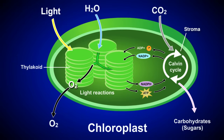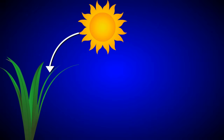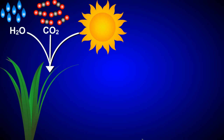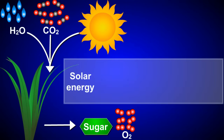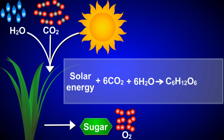Now that you understand a little about light reactions and Calvin cycle reactions, let's zoom back out and do a quick review. During photosynthesis, plants capture the energy from sunlight and use it along with water and carbon dioxide to produce carbohydrates or sugars. Oxygen is also released as a byproduct. These photosynthetic reactions are typically written as: solar energy plus six carbon dioxide molecules plus six water molecules react to produce one glucose molecule and six molecules of oxygen.